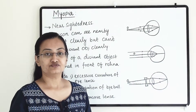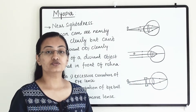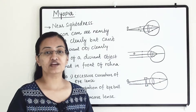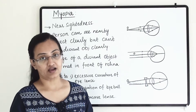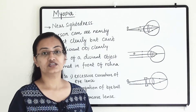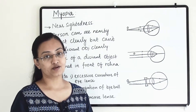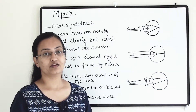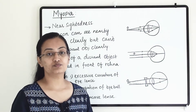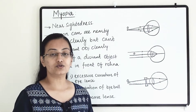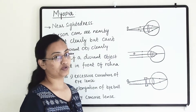Welcome to Learn Yourself. Today we are going to learn and understand the three defects of the eye. First is myopia, second is hypermetropia, and third one is presbyopia. So let us start with myopia.